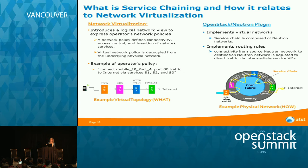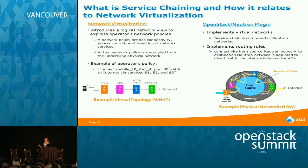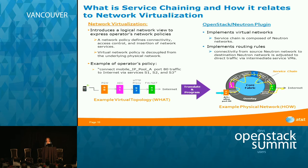A service chain is composed of Neutron networks. On the left is an abstract representation; on the right is the implementation. We have overlay networks stitched together such that traffic from the source — a network attached to the P-GW — and the network attached to the internet are adjusted so traffic flows through those service appliances. We translate and program the physical network so this happens — going from 'what' to 'how'.